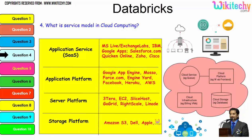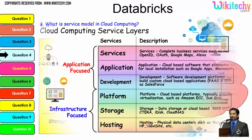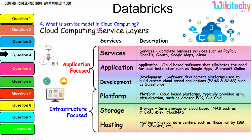Digging further into the service model: typical examples include application services, application platforms, server platforms, and storage platforms provided by Amazon S3, Dell, and Apple. The important service layers are services, application development platform, storage, and hosting. These are important services that will also be asked in interviews about cloud computing.